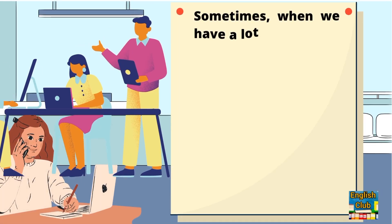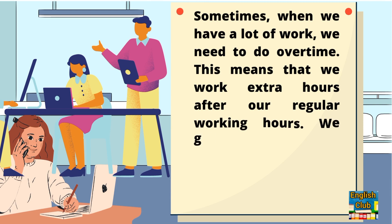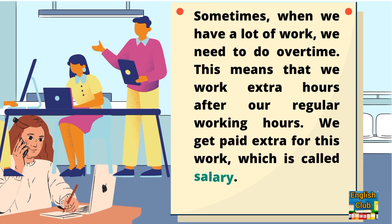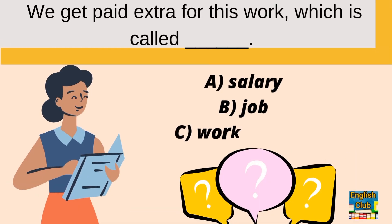Sometimes when we have a lot of work we need to do overtime. This means that we work extra hours after our regular working hours. We get paid extra for this work, which is called salary. We get paid extra for this work, which is called — A: salary, B: job, C: working time.